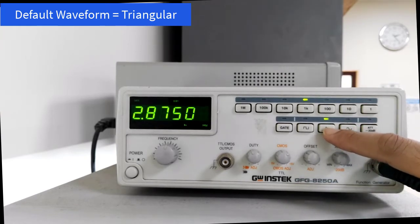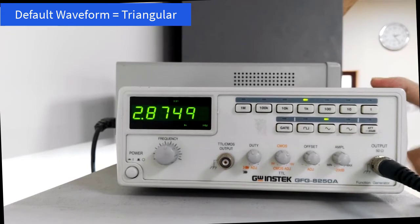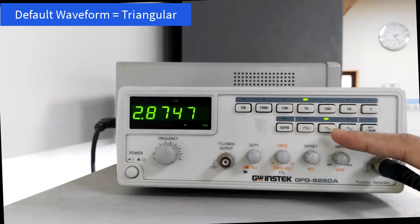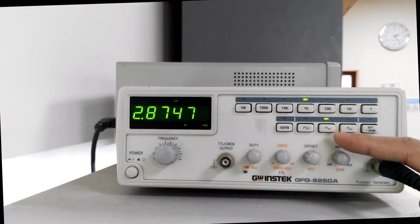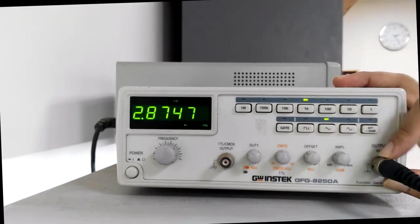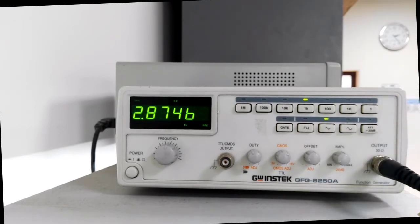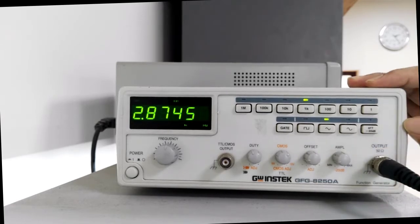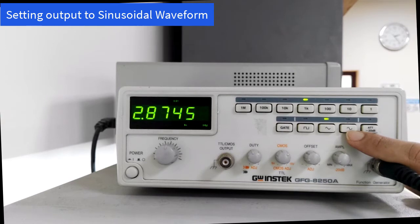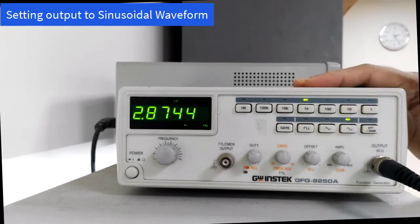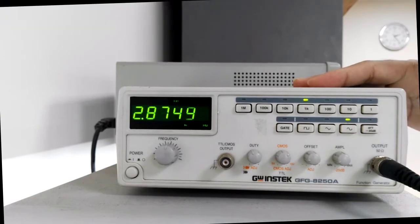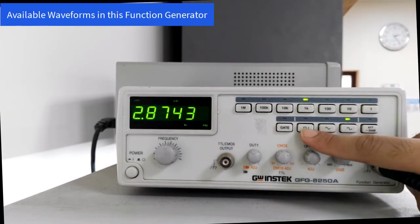By default, you will see that the triangular wave is lit up, so this function generator by default supplies a triangular wave. When you are connecting this to a circuit, make sure you are using the proper signal source. In this lab, in the 241 lab, we will be using sinusoid throughout, so you will press this sinusoid button to get the sinusoid signal. This function generator supplies three types of sources: sinusoid, triangular, and square.